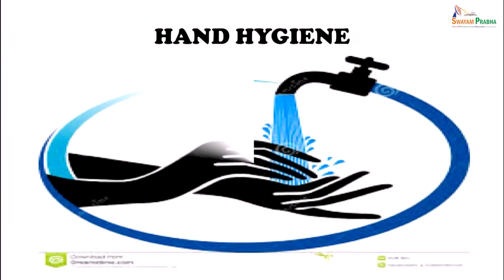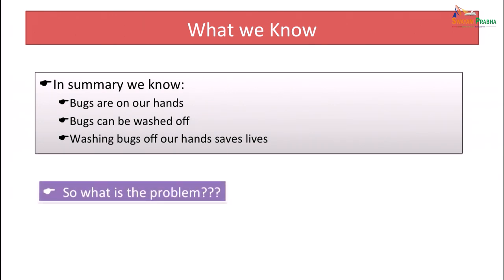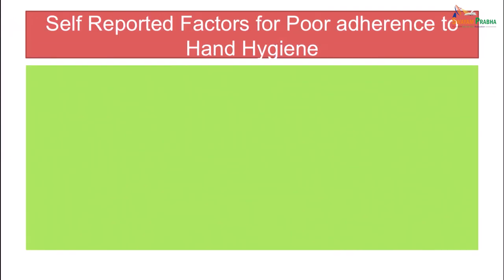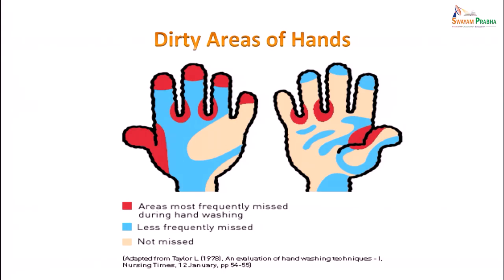Hand hygiene is important. The most important action is hand washing, and how you do it matters. In summary, bugs are on our hands, they need to be washed off, and washing bugs off our hands saves lives. Reported factors for poor adherence to hand hygiene include lack of soap, water or sinks, being very busy, insufficient time, understaffing, overcrowding, patient priority, and a perceived low risk of acquiring infection. Areas marked red on the hand are frequently missed during washing; blue areas are less frequently missed; cream-coloured areas are always washed.